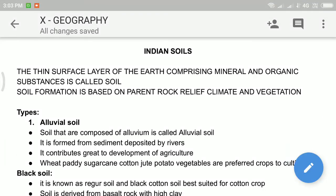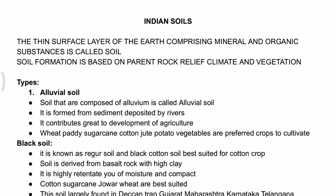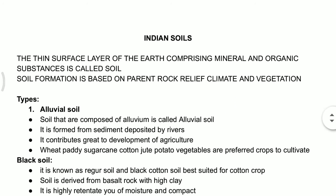Hi everyone, this is Praveen. Today I came up with one more lesson — Indian soils from the geography part. First we have to concentrate on what is the meaning of soil. Soil is the product of weathering of rocks. Because of weathering, the outermost layer of the earth has a valuable substance that we call soil. In a particular definition, we can say that a thin surface layer of the earth comprising mineral and organic substances is called soil.